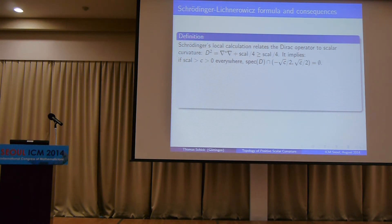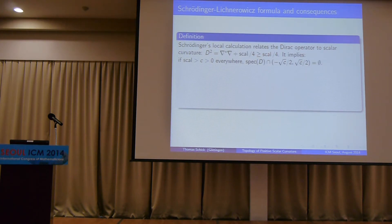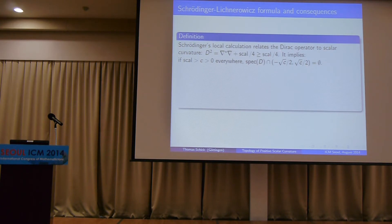Schrödinger's calculation shows D² = ∇*∇ + κ/4, where ∇*∇ is a positive operator. So the square of the Dirac operator is bounded below by the scalar curvature divided by 4. If the scalar curvature is bounded below by some positive constant c, then the spectrum of D cannot contain anything in an interval around 0. This is the connection between positivity of scalar curvature and the Dirac operator: positive scalar curvature creates a spectral gap.